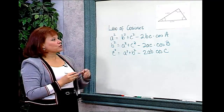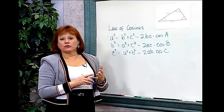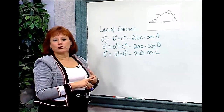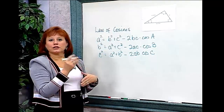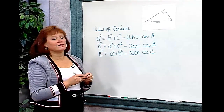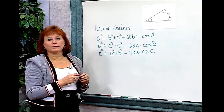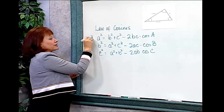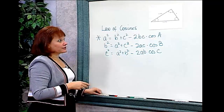In this triangle, I have three things missing: I don't know angle B, I don't know angle C, and I don't know side A. Since I don't have the ratio that lets me use the law of sines, if I want to find A, I'm going to have to use the law of cosines, starting with the first version.